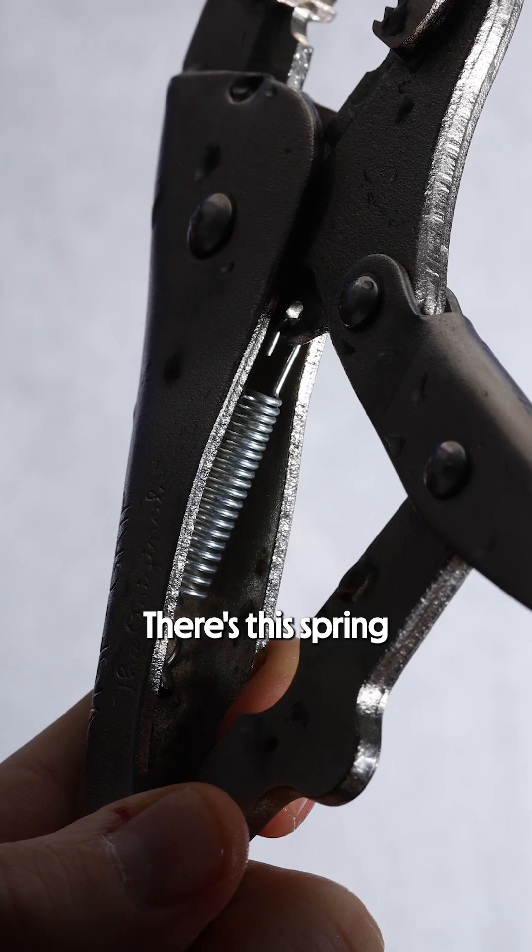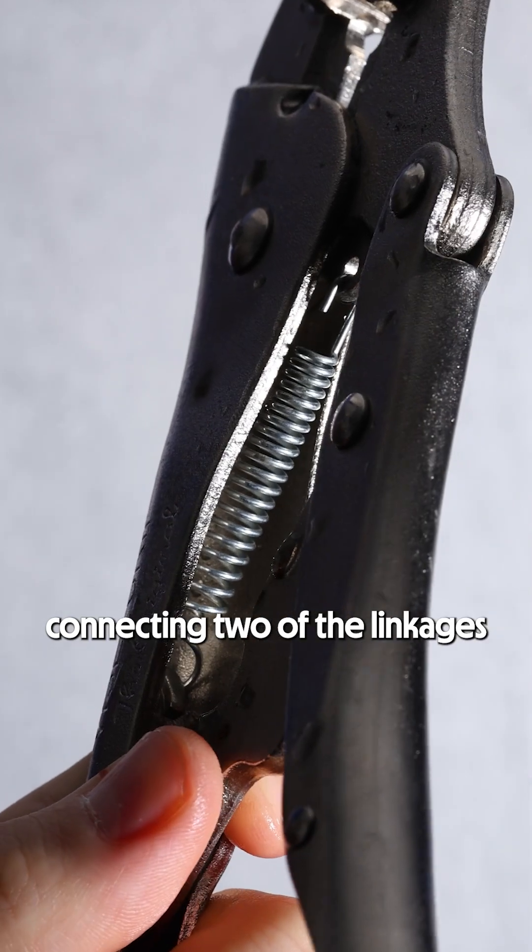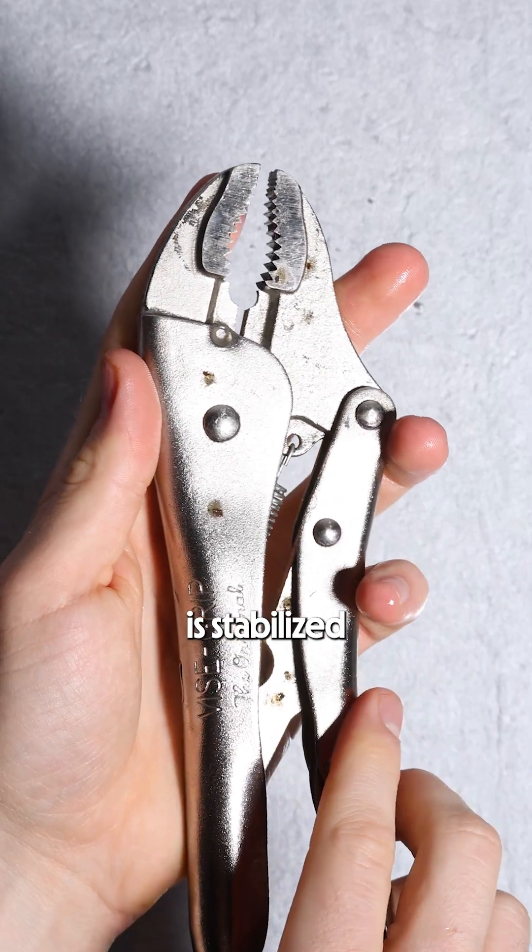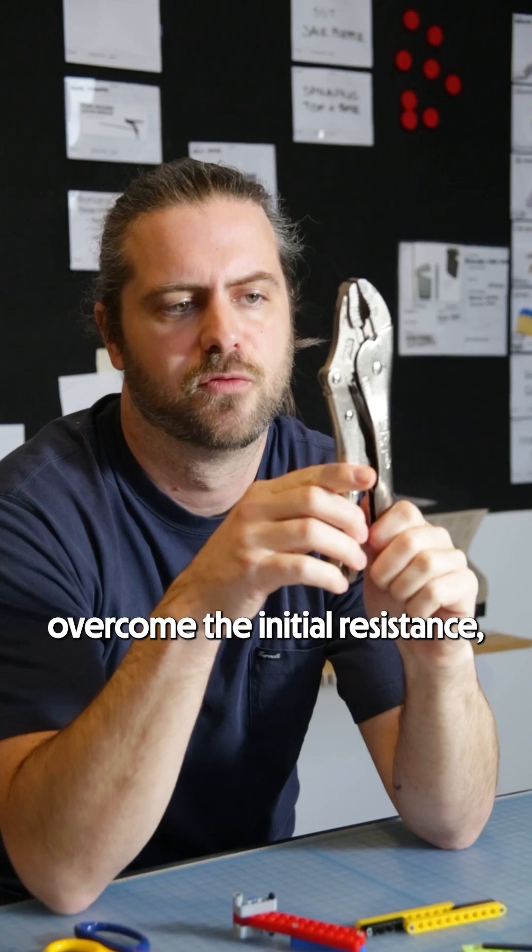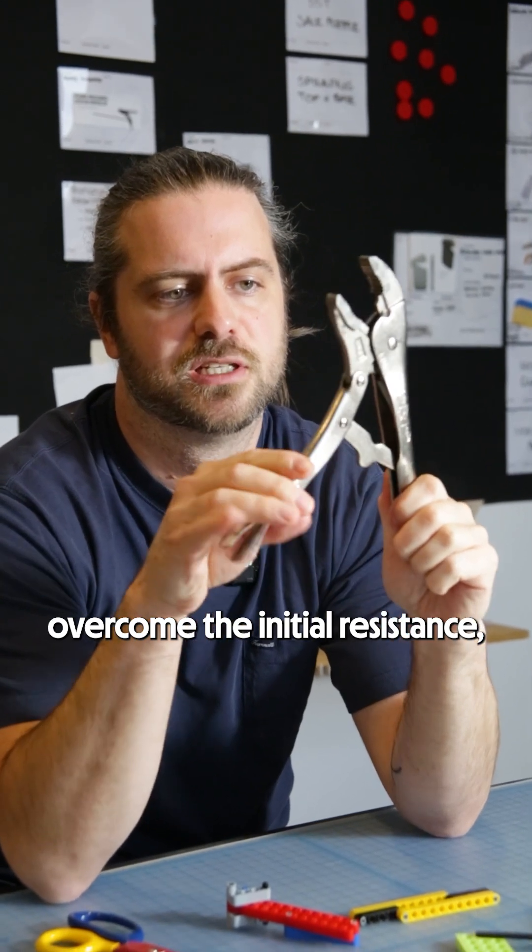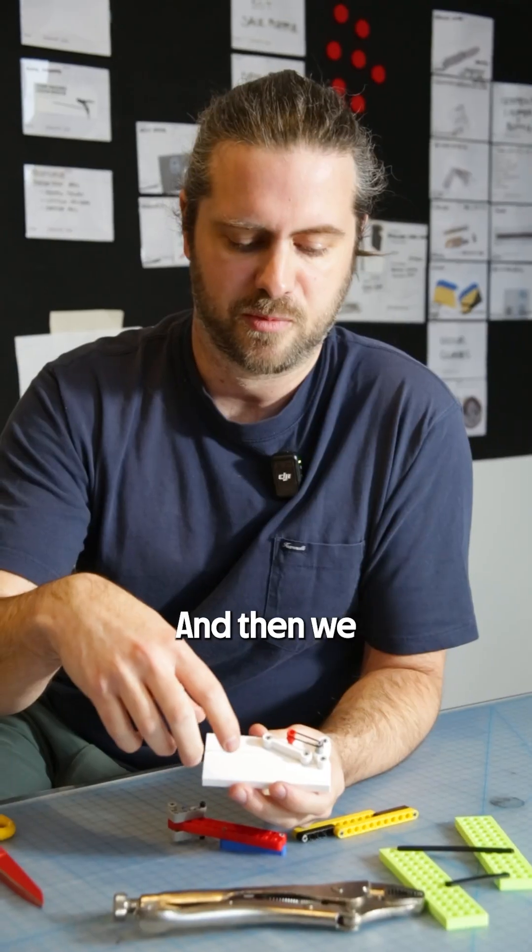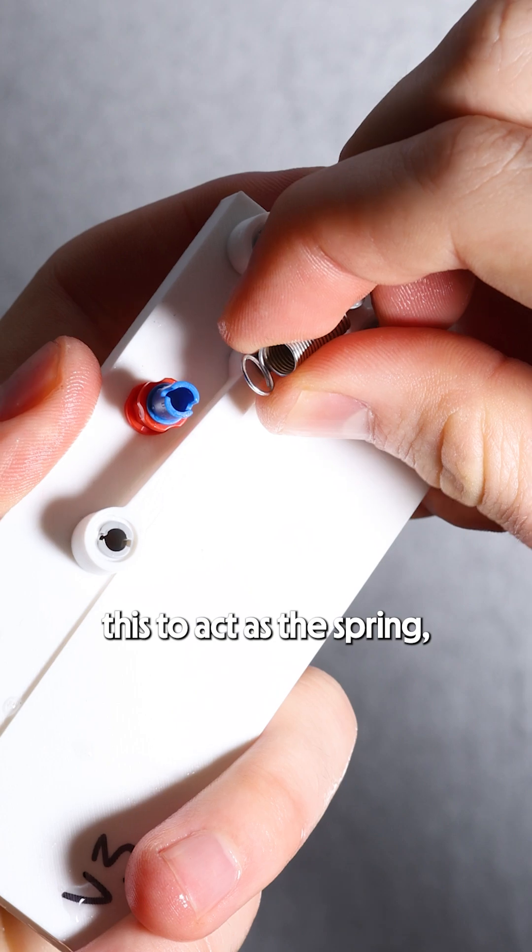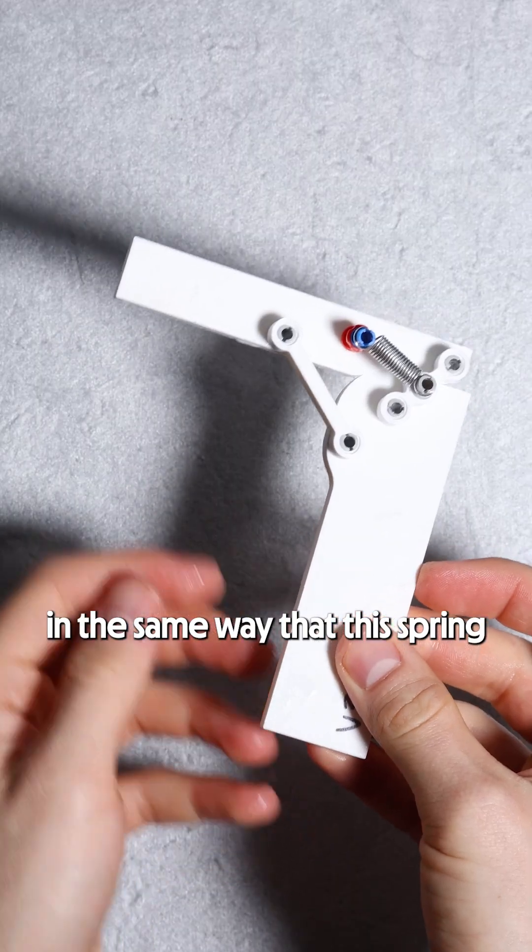And then there was another discovery - there's this spring connecting two of the linkages so that the vice grip is stabilized in the closed position. But once you overcome a little bit of that initial resistance it wants to open up, and then we more or less hacked together this spring in the same way that this spring is working in the vice grip.